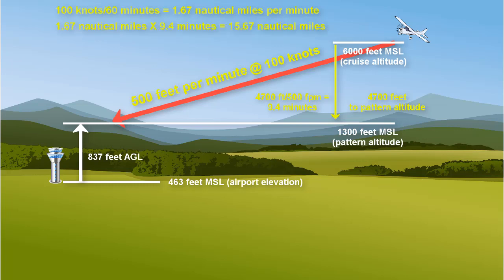Finally, take the 1.67 nautical miles per minute and multiply it by 9.4 minutes, and that gives us a distance of 15.67 nautical miles. So we can begin the descent around 16 miles, or maybe a little more, but always keep the terrain and obstacles in mind as you might need to vary your descent if that is an issue.